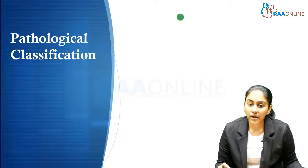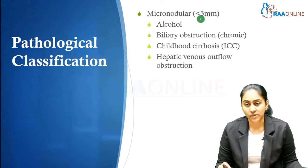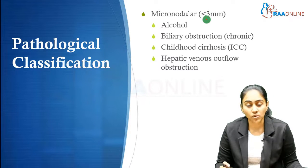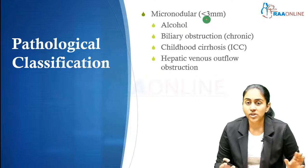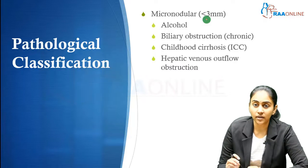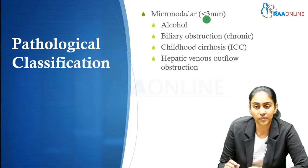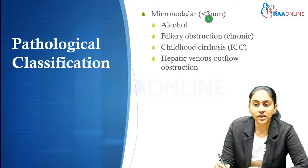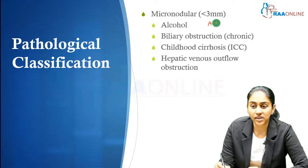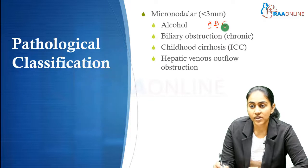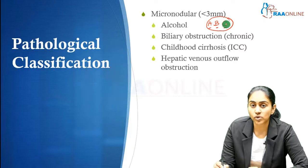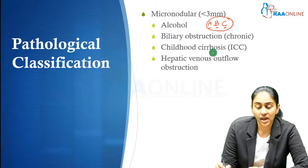Looking at the pathological classification of cirrhosis: histopathologically, cirrhosis can be classified into micronodular cirrhosis, characterized by tiny nodules less than 3 mm in diameter. This is caused by ABC — alcohol, biliary obstruction (chronic biliary obstruction), and childhood cirrhosis (Indian childhood cirrhosis).